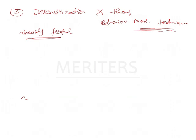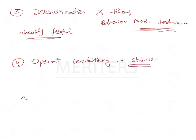Lastly, there is operant conditioning, which was given by Skinner. It is based on four tools: positive reinforcement, negative reinforcement, omission, and punishment.